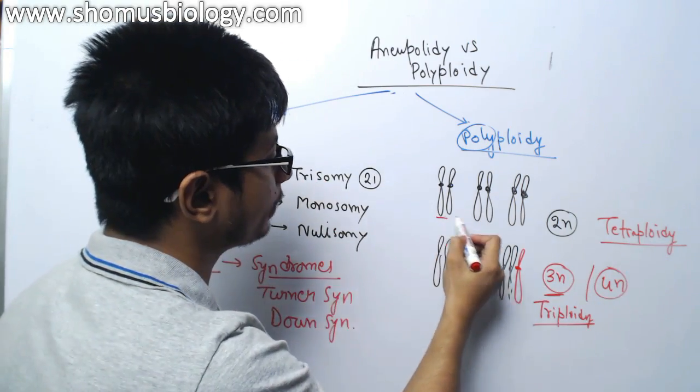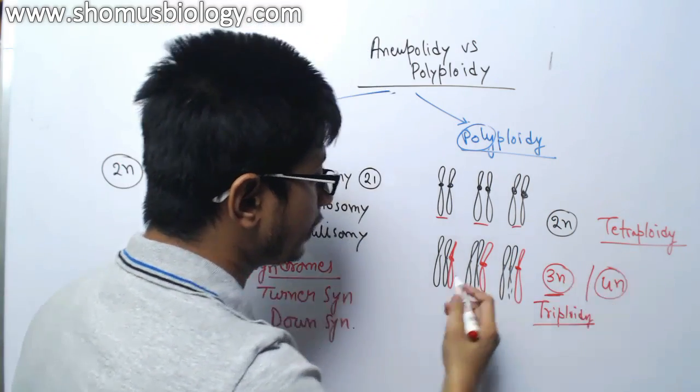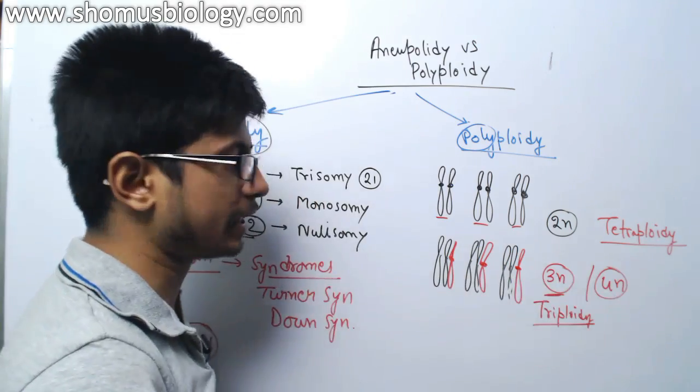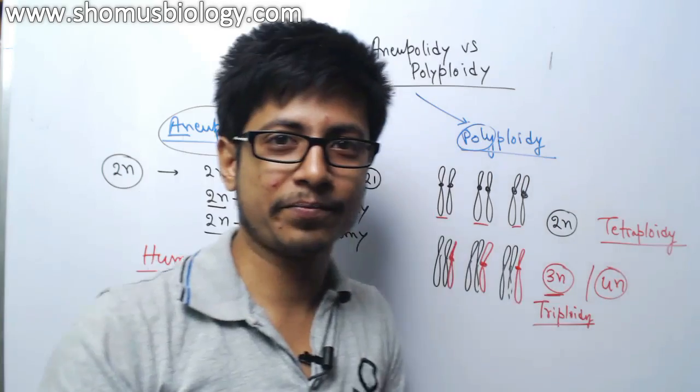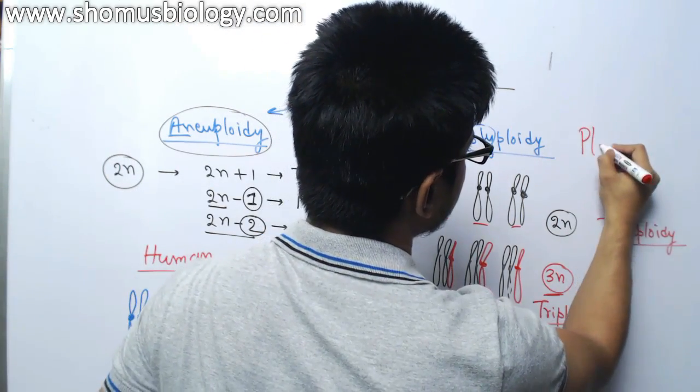Tetraploidy means 4 chromosomes per set. Tri means 3 chromosomes per set. Earlier, it should be present 2 chromosomes. That is the normal rule. Octa means 8 chromosomes per set. This is a change in the number of sets.